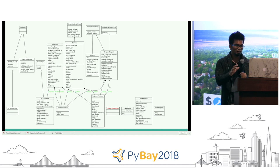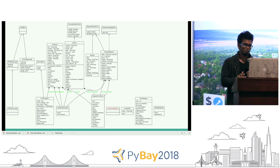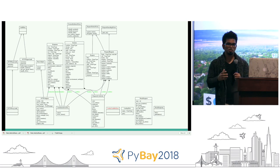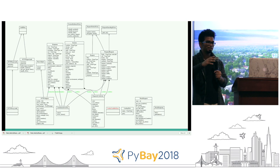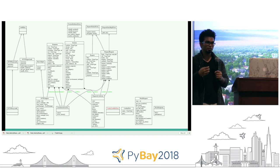Once you have this, the key takeaway from this graph is that you get all your components in one place and can discover the relationship between all these components — how each of those components interact with each other and get a little bit more insight into your software.